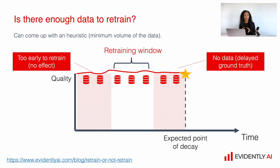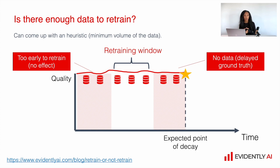When it comes to retraining, it is very important to check whether we have enough data to retrain. Because even if we see quite drastic data shifts, we might just not have enough data to update the model. You might have enough data to detect data drift, but that amount of data might be just not enough to retrain your model. This is why it is always good to come up with some heuristics for the minimum amount of data you need to retrain your model.